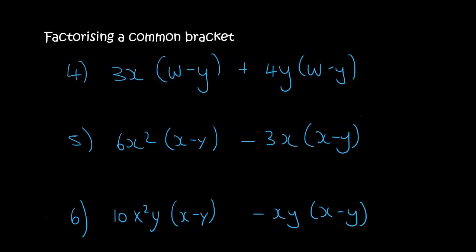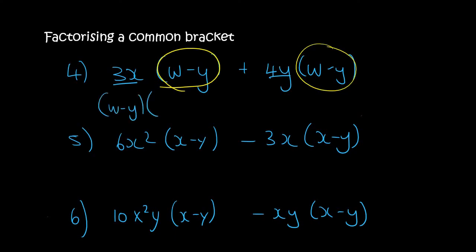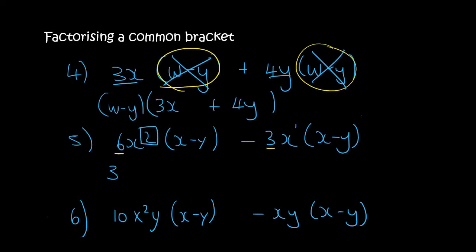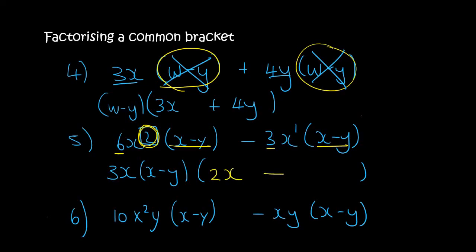Here are the last three for this lesson. There's nothing common with 3x and 4y, but w minus y is the same as w minus y, so that's all we're going to take out in the front. This bracket is gone and this is gone, so in the first term we're still going to have a 3x, and in the second term we're still going to have 4y. Now in the next one there are quite a few things in common. For 6 and 3, we know 3 can go into both, so we'll take that out. There are two x's here and one x here, so we take out the lowest, and they both have x minus y. In the first term, taking a 3 out of 6 leaves 2, so there's still 2x left. In the second term there's nothing left, so we just say minus 1.